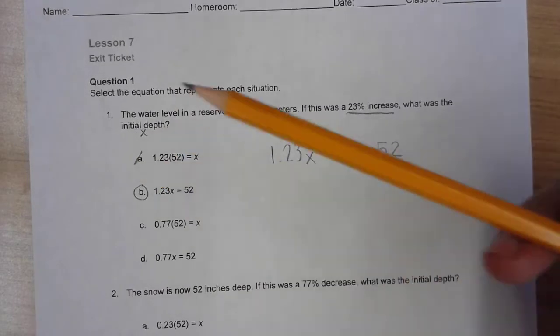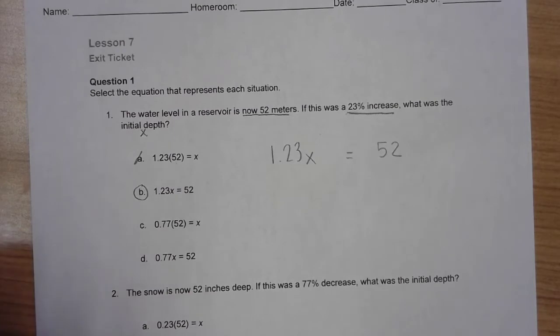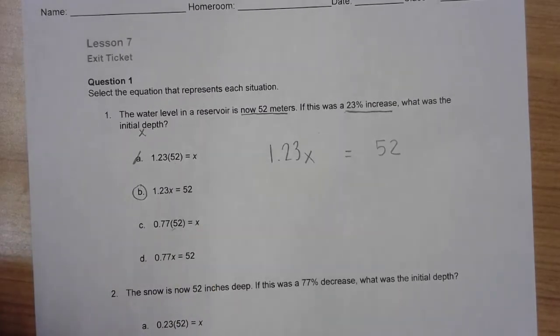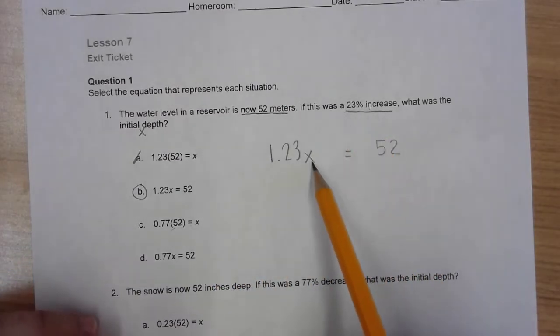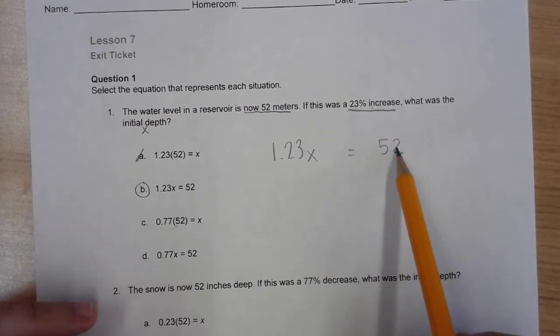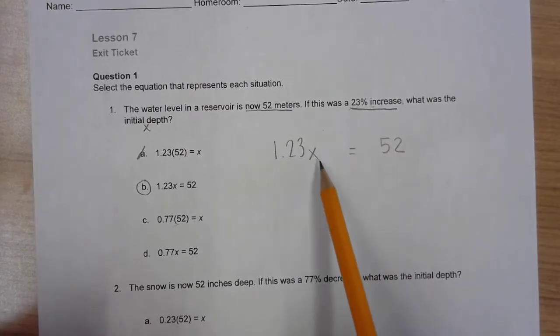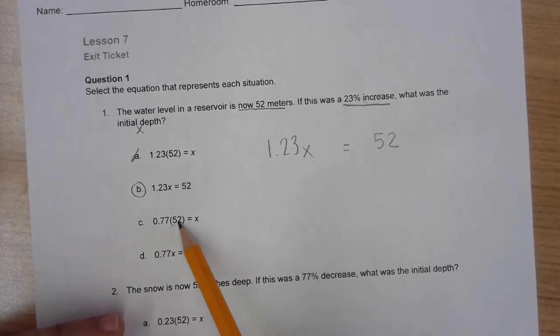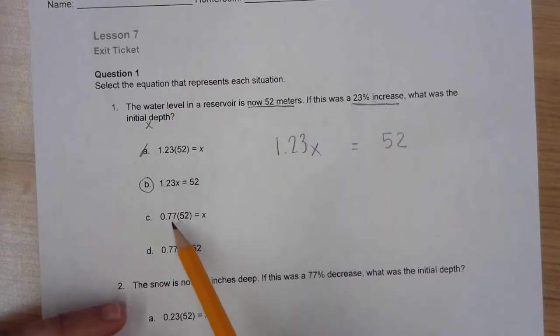Below 52 is what X used to be - it had to increase in order to get to the 52. So that answer choice, no thank you. Now over here we have 77% of 52 will get me to X. That's a very common misconception where you think that because there's a 23% increase from X, that means you can do a 23% decrease from 52. That is not what's going on because 23% of X is not the same as 23% of 52.